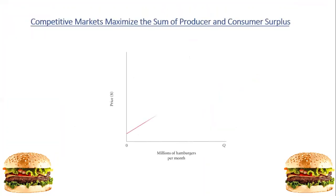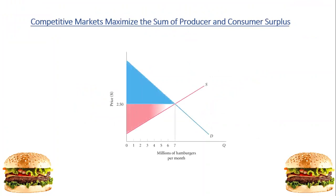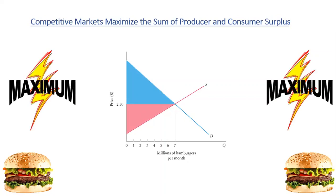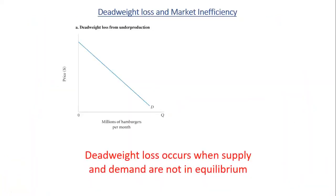Total producer surplus and consumer surplus is greatest where supply and demand curves intersect at equilibrium. So at equilibrium we reach the maximum consumer and producer surplus, also called total surplus. Finally, dead weight loss.